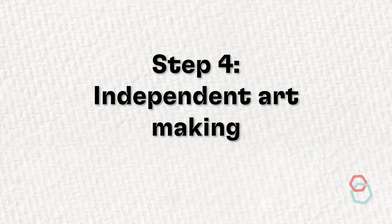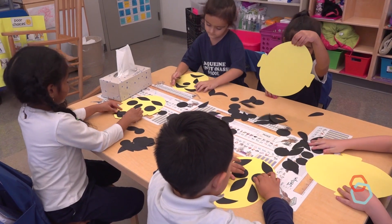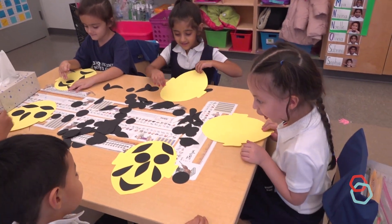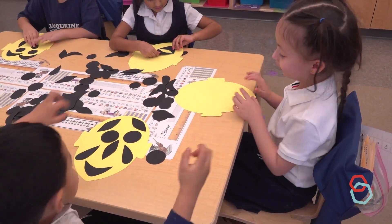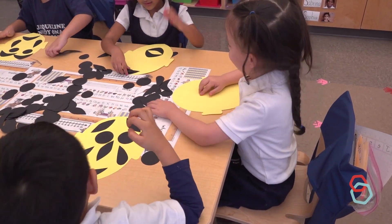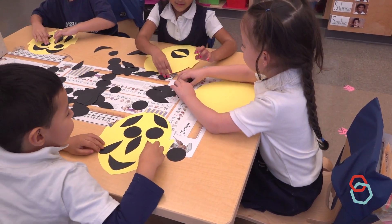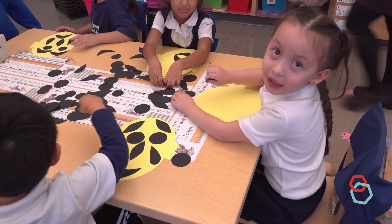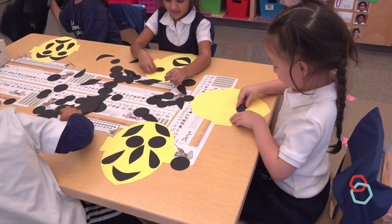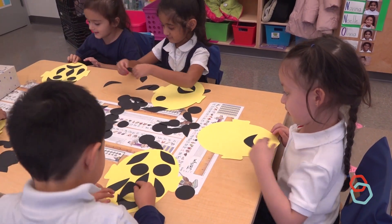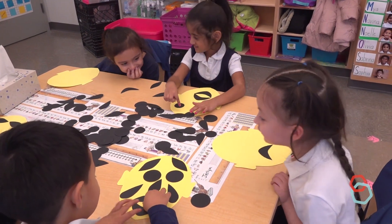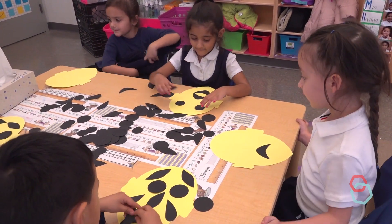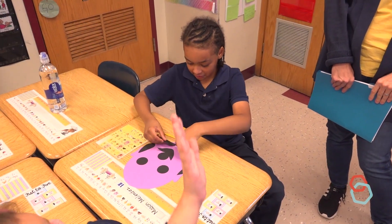Step four: independent art making time. Students are given at least 20 minutes to make as many faces as they can using the five shapes. To encourage exploration and revision, have individual students or the whole class occasionally dump their choices and start over. We recommend spending one full session exploring without glue. What do teachers do while kids are working independently?